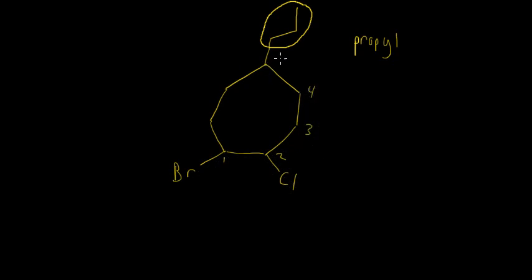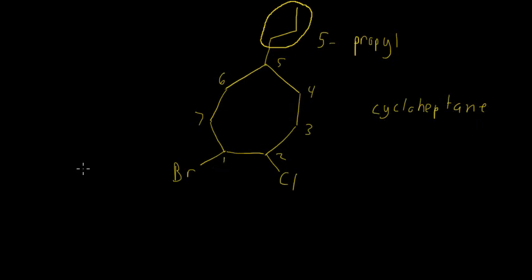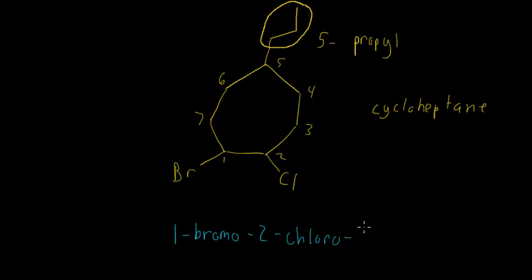I'll go ahead and number this ring. It's going to be seven carbons in the ring, and then we have a five-propyl, a one-bromo, and a two-chloro, and then the ring is going to end up being cycloheptane. I always like to write out what they're going to be just so I don't make a mistake when naming it later. So the name is: one-bromo, two-chloro, five-propylcycloheptane.